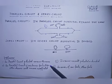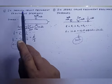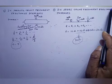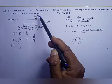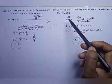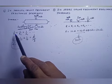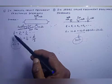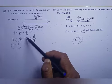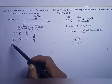Let us move to the third difference. In a parallel circuit, equivalent resistance decreases, whereas in a series circuit, equivalent resistance increases. Suppose we are giving 10 ohm to each device. In a parallel circuit, the formula is: 1/R = 1/R1 + 1/R2. So over here we get 1/5, meaning the value of R will be 5 ohm.